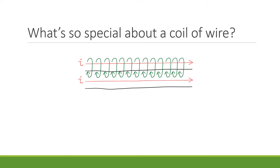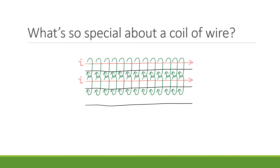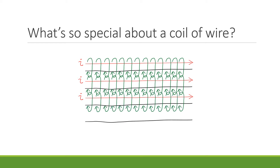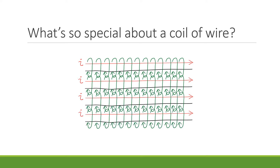This current would, in turn, create its own magnetic field. And if there was another wire lying next to your first two, it would experience the field from the second wire, which would create a current in the third wire, which would create another magnetic field, and so on. So if you had more wires lying parallel, they would undergo the same phenomenon.